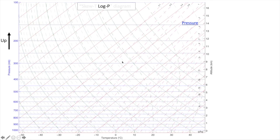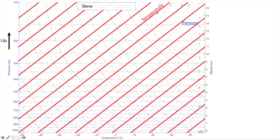The skew in Skew-T refers to the fact that the lines of constant temperature, or isotherms, are skewed 45 degrees clockwise, which is mostly done out of convenience so that we can plot a wider range of temperatures in a more compact space. But this skewing makes these charts a little counterintuitive for those who have not worked with them before.